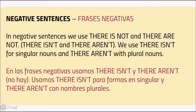Negative sentences. In negative sentences we use 'there is not' and 'there are not', contracted as 'there isn't' and 'there aren't'. We use 'there isn't' for singular nouns and 'there aren't' with plural nouns.